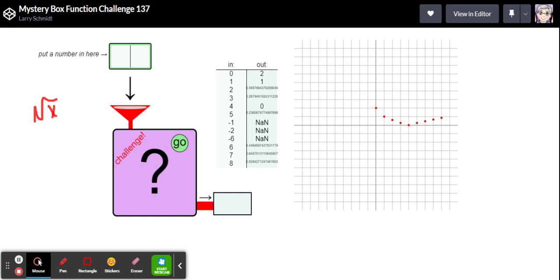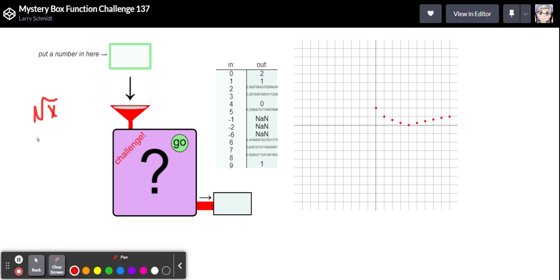So I'm still thinking we have a square root involved here, we would get numbers like that but what exactly is being done to the square root? Let's try nine. Nine we get one so let's think about what would happen if we took the square root of nine.